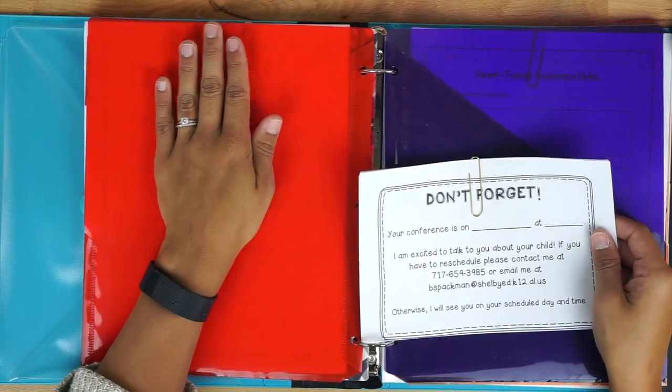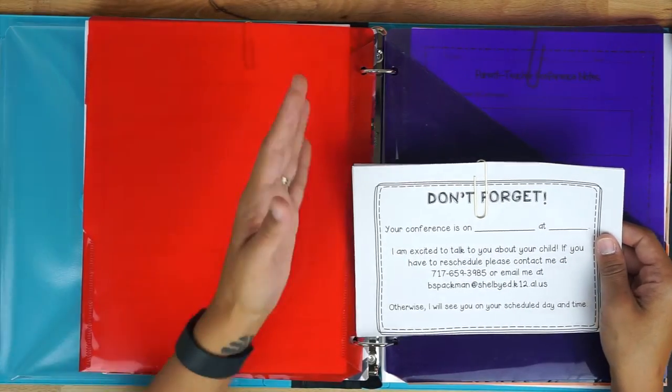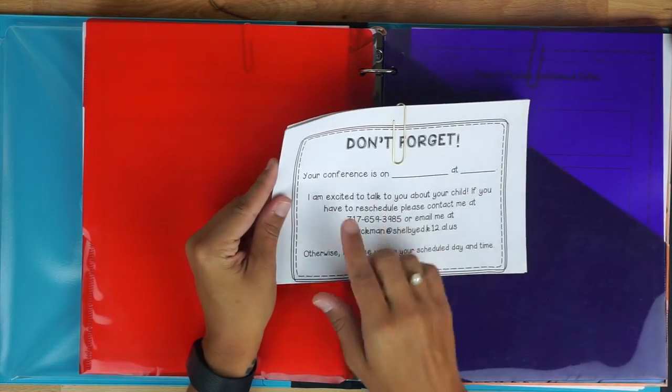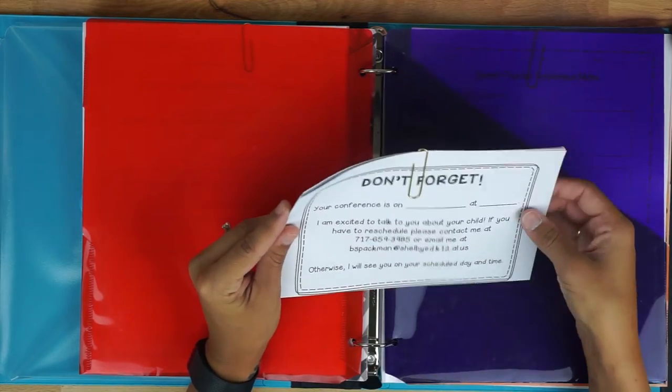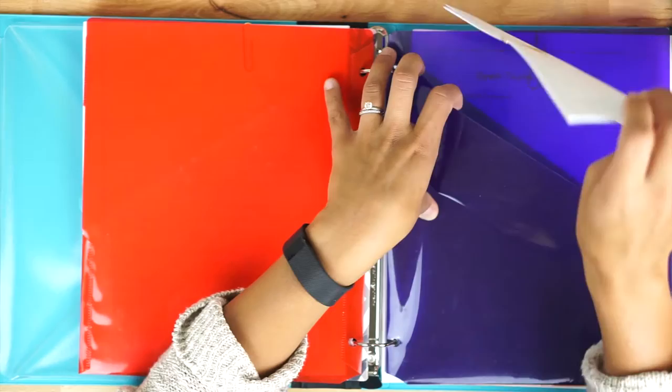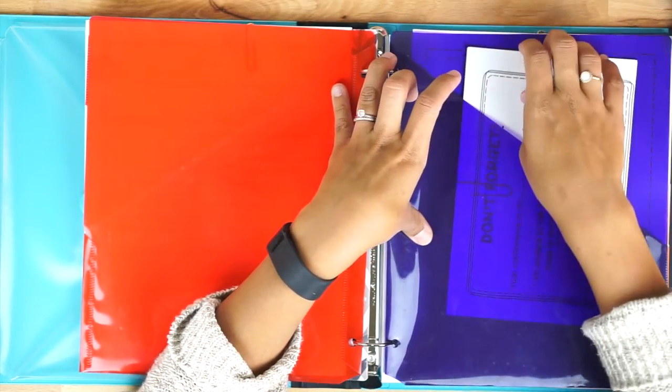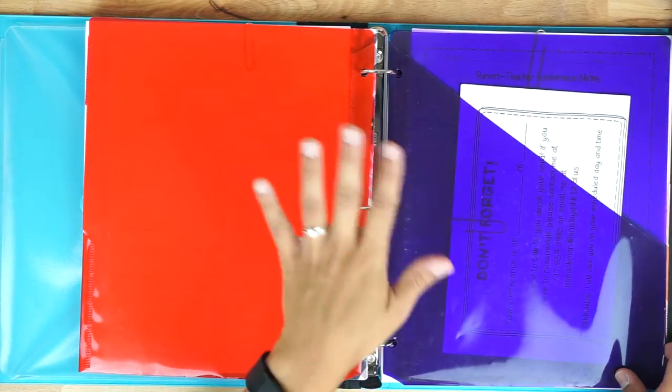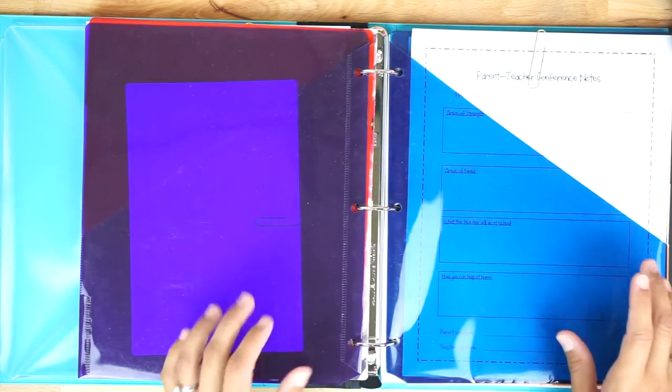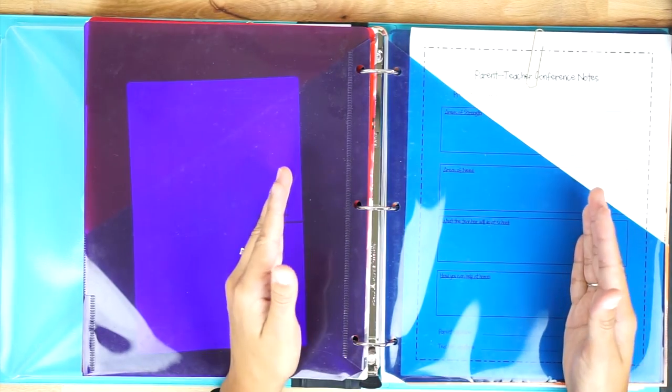So the next one is there don't forget. So once they have sent this back to me and I have their stuff scheduled the day before I will put a don't forget reminder in there. So your conference is on blank at blank has my email my phone number in case they need to reschedule in anyway. So this would go home just to remind them oh hey don't forget your meeting with me on this day at this time.